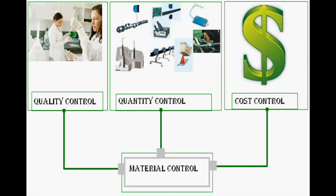How to control the quality of your material, which you have to produce in your factory — it is very easy. Just purchase a quality product and use it in production. For this, you can use ISO standards and any other standards for purchasing a quality material.